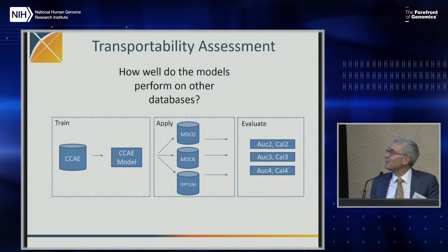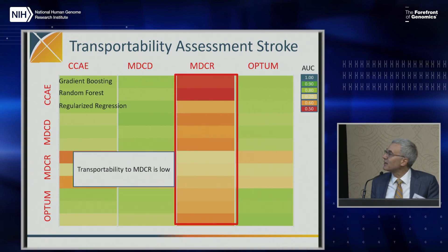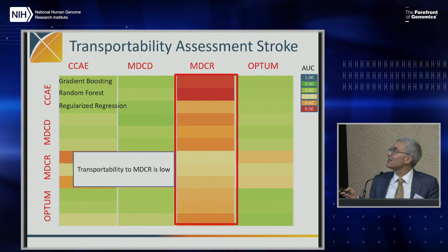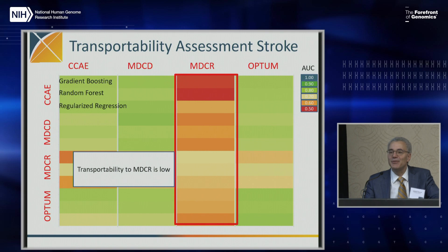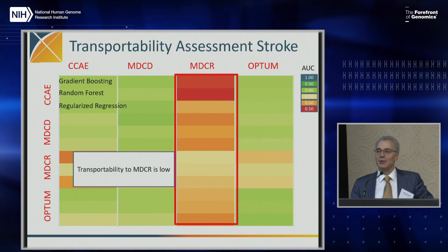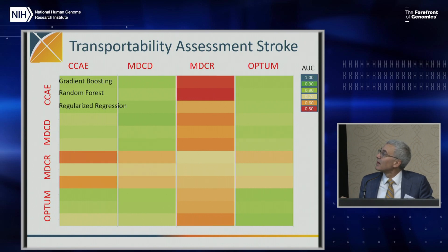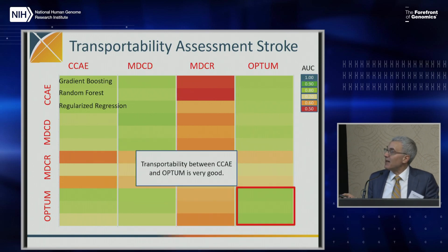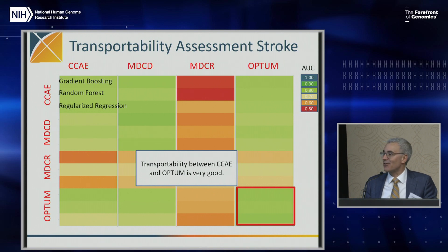We can compare databases — transportability, actually. We build it in one database and test it in another. Transportability to Medicare is the worst, even worse than building within Medicare. That makes sense: if you're going from a database with a general population, you haven't had the chance to optimize on an old population, so you'll do the worst prediction there. But between CCAE and OPTIM — both private payer general population databases — it doesn't matter where you started the algorithm, it works well in the opposite.